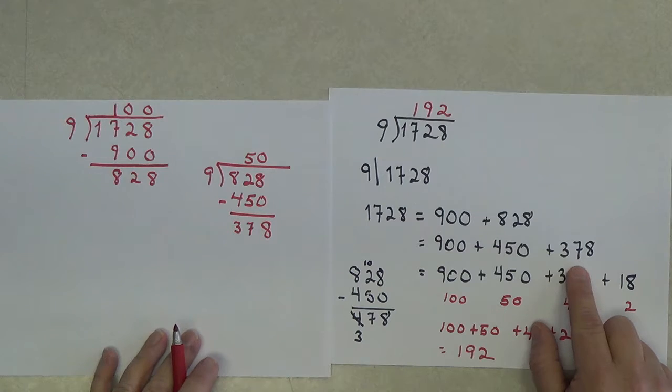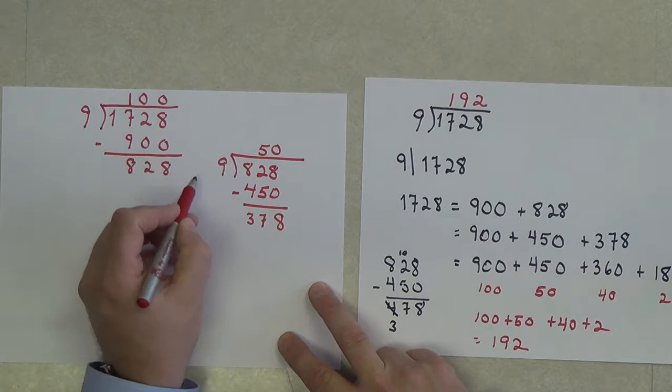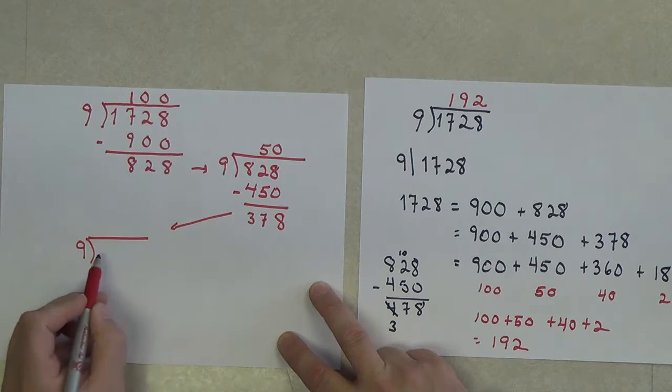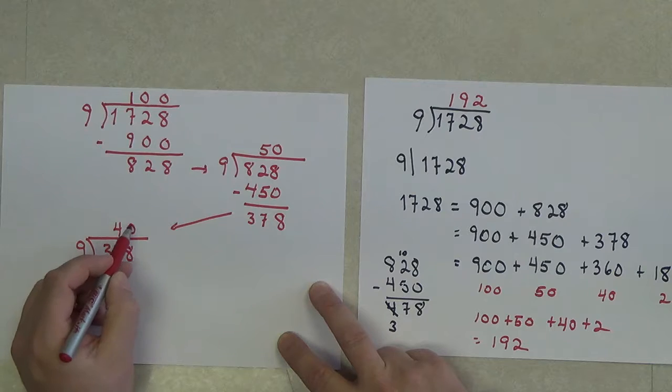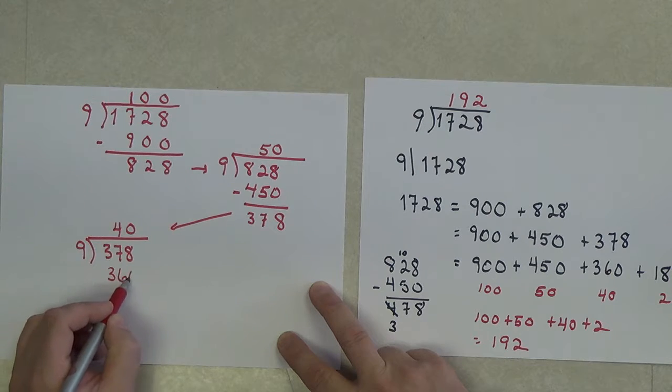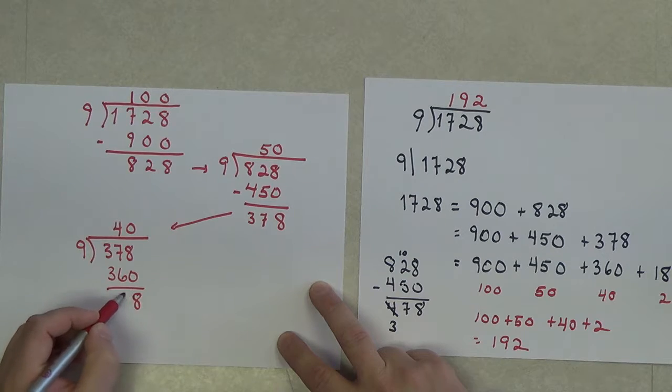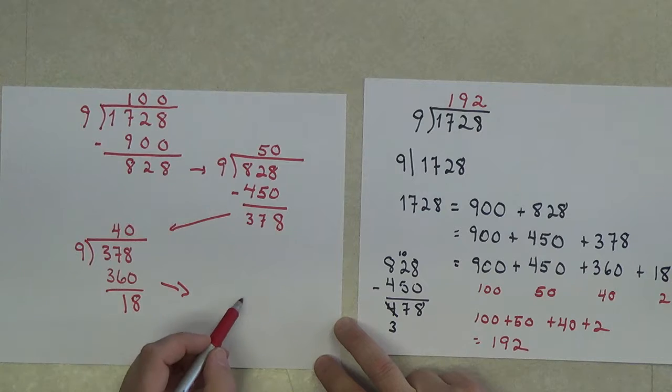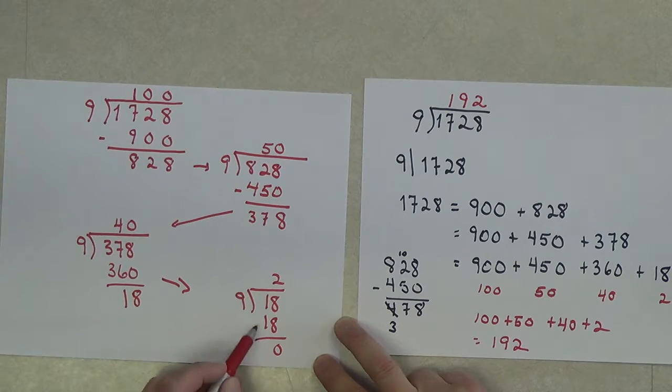Which leaves me yet a new problem. I now have the problem of 9 divided into 378. And maybe now I say 40 times. 40 times 9 being 360. So when I do this subtraction, I in fact get the 18. Which leads me to my last problem. What I would say is 9 divides 18 twice, getting a 0 remainder.